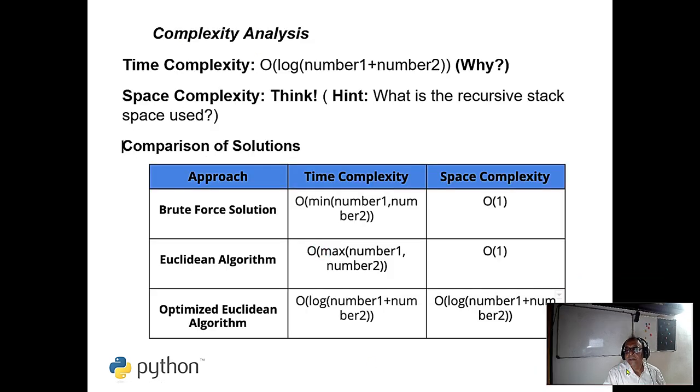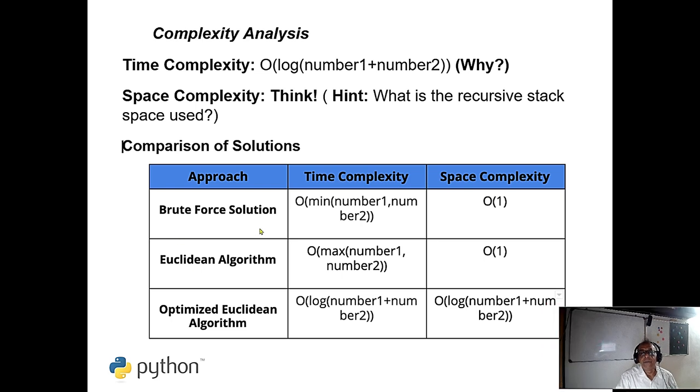See here, you can see this. The brute force solution space complexity O(1), you know dot fix. But this Euclidean algorithm, this is the logarithmic comes. Why log comes? Because you always divide it by this, so this is the log. This log should be base 10, not divided by 2 because we are taking the decimal number. So this is the space complexity is also not O(1), it will take.